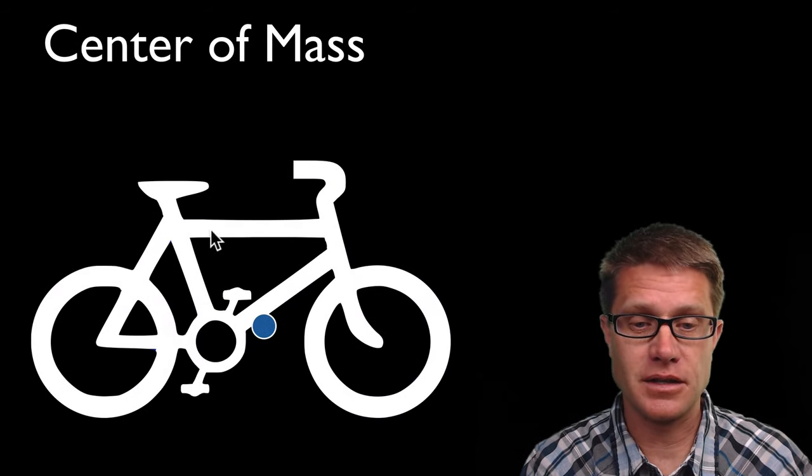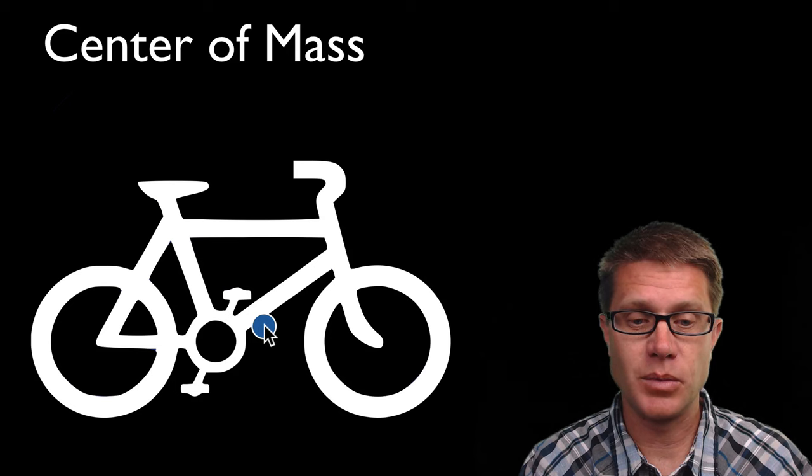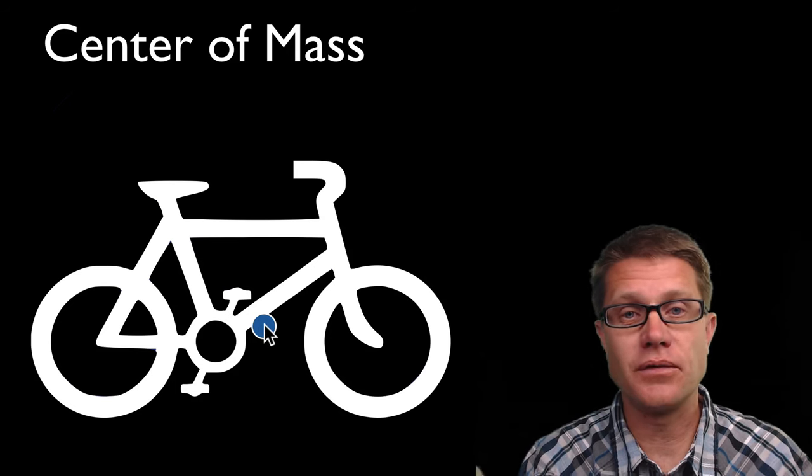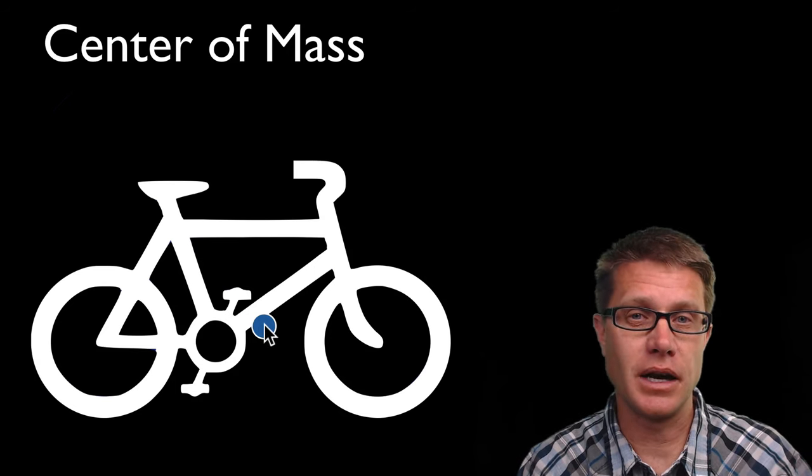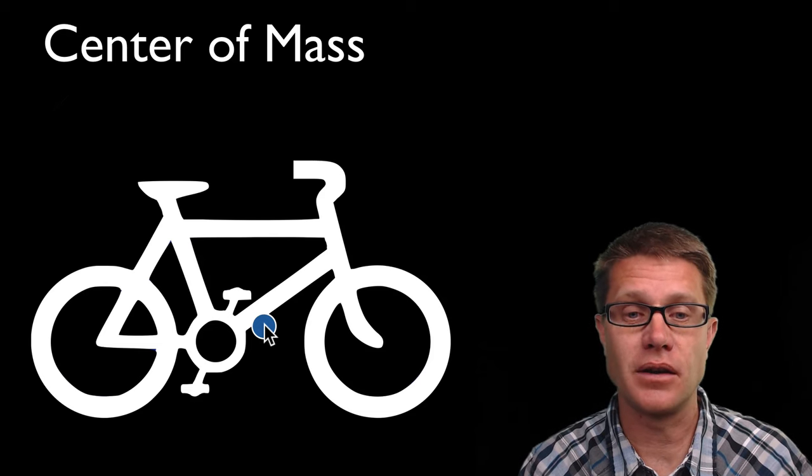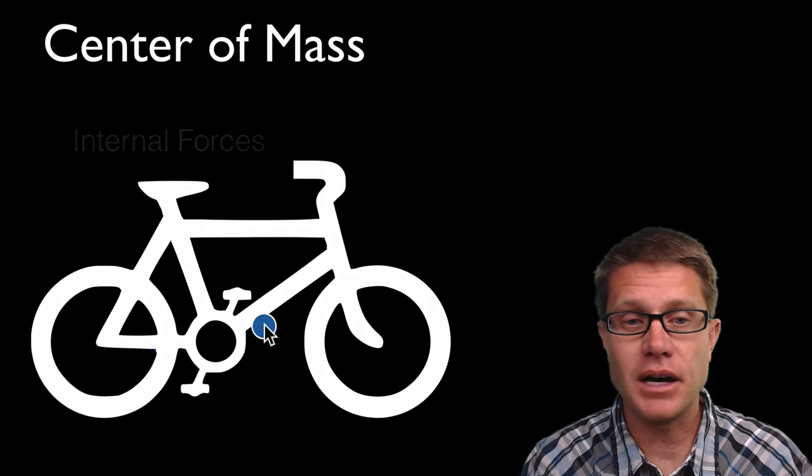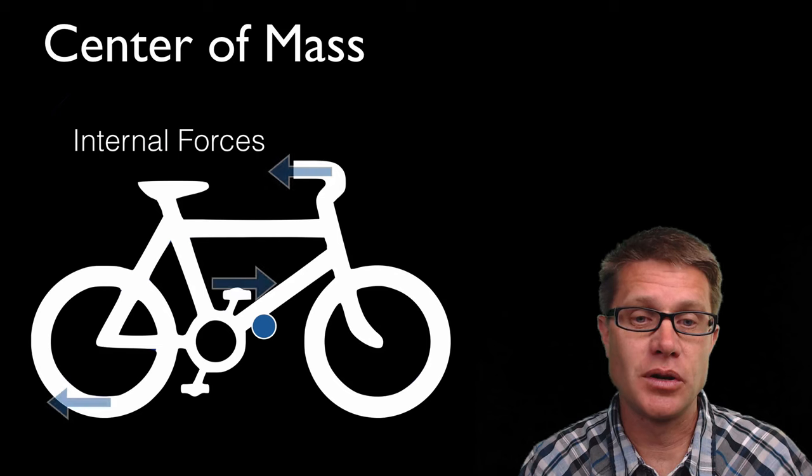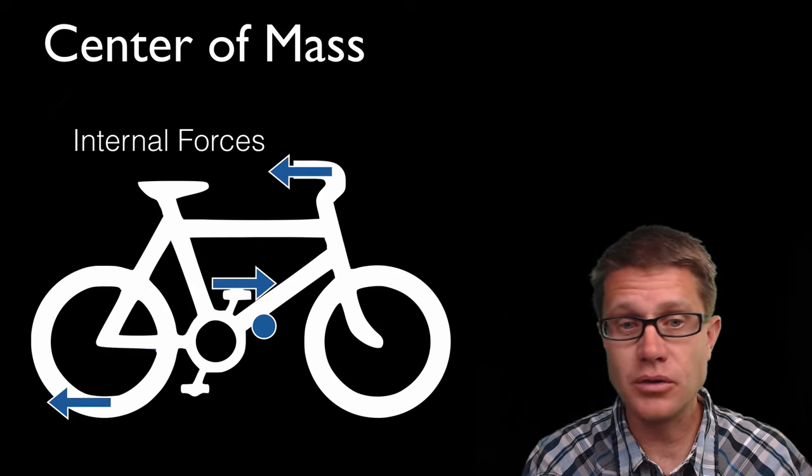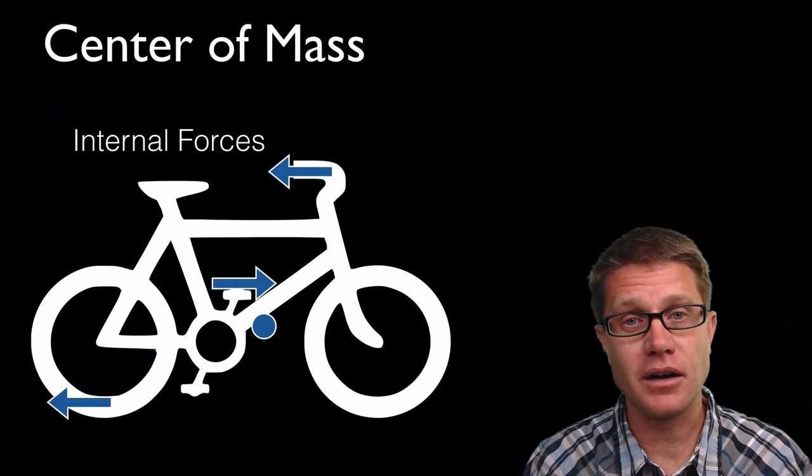If we had a bicycle like this, the center of mass of the bicycle itself might be right here. So if we are solving a physics problem where we treat this bicycle as one object, it is important for us to know where that center of mass is. Because there is going to be a lot of internal forces. Maybe you are pushing on the road, you are pushing on the pedal, you are pulling back on the handlebar.